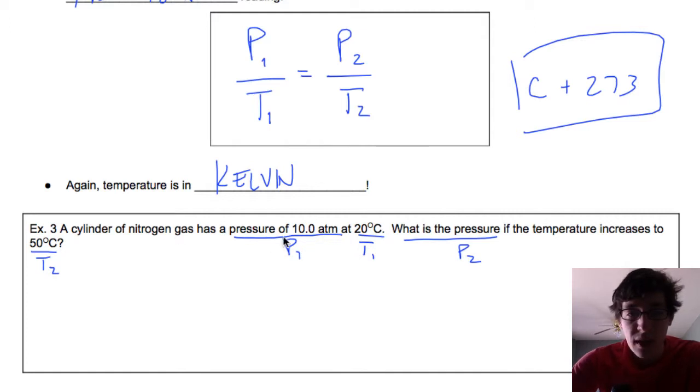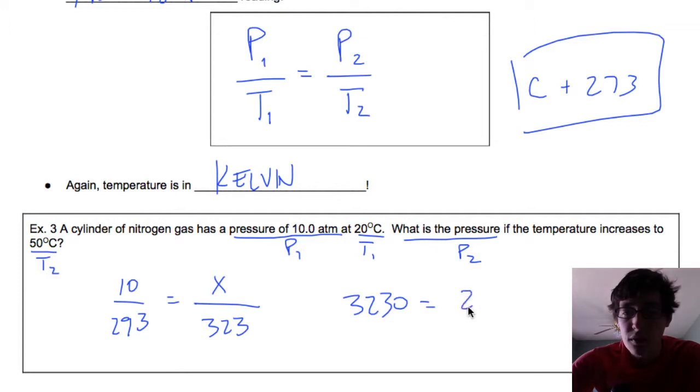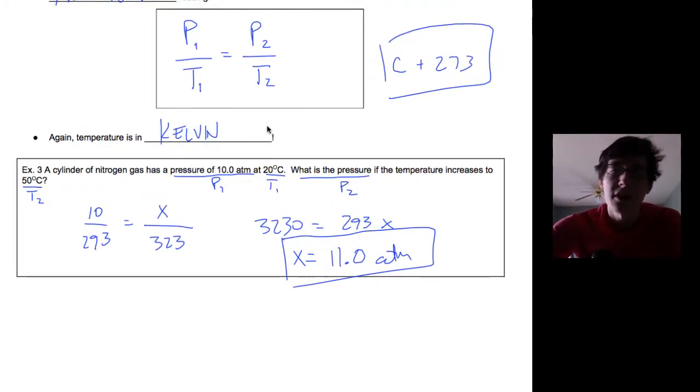Using P1 over T1 equals P2 over T2, we'll fill in our data. We have 10 atmospheres for pressure one, so we do 10 over temperature one, so 273 plus 20 gives us 293. That equals what is the pressure x over the new temperature, 50 plus 273 gives us 323. Cross multiply, 323 times 10 equals 293x, and x equals 11.0 atmospheres when you divide both. That's what we would expect. As temperature goes up, pressure also goes up. This is a direct relationship.